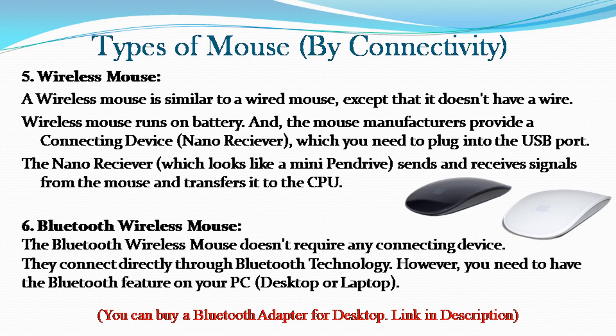A wireless mouse is similar to a wired mouse, except that it doesn't have a wire. Wireless mouse runs on battery. The mouse manufacturers provide a connecting device called a nano receiver, which you need to plug into the USB port. The nano receiver, which looks like a mini pen drive, sends and receives signals from the mouse and transfers it to the CPU.